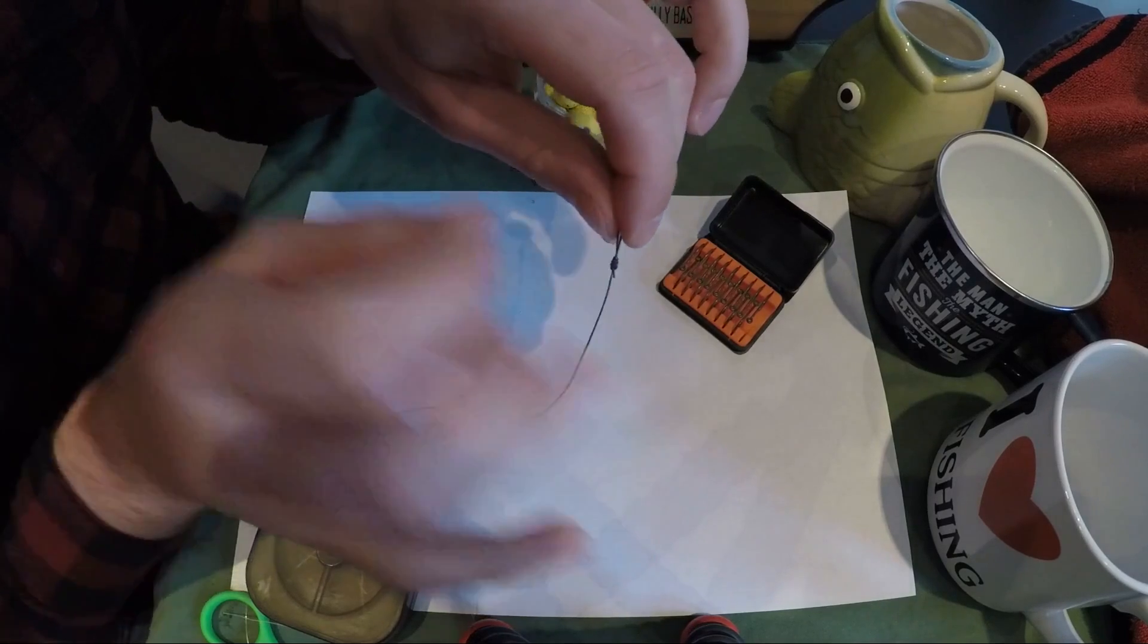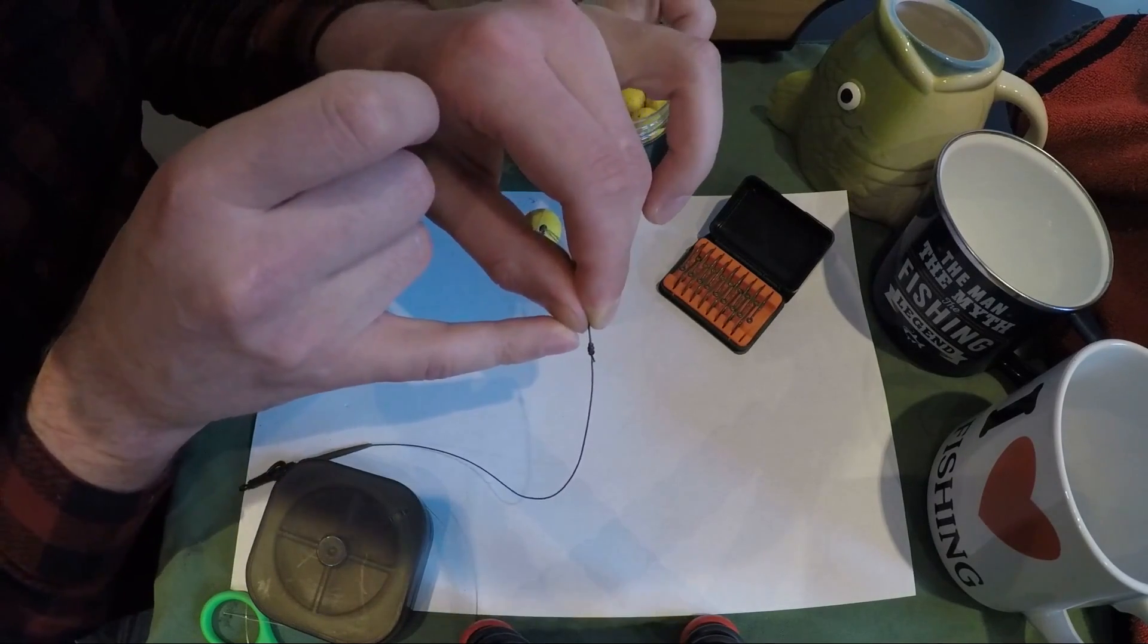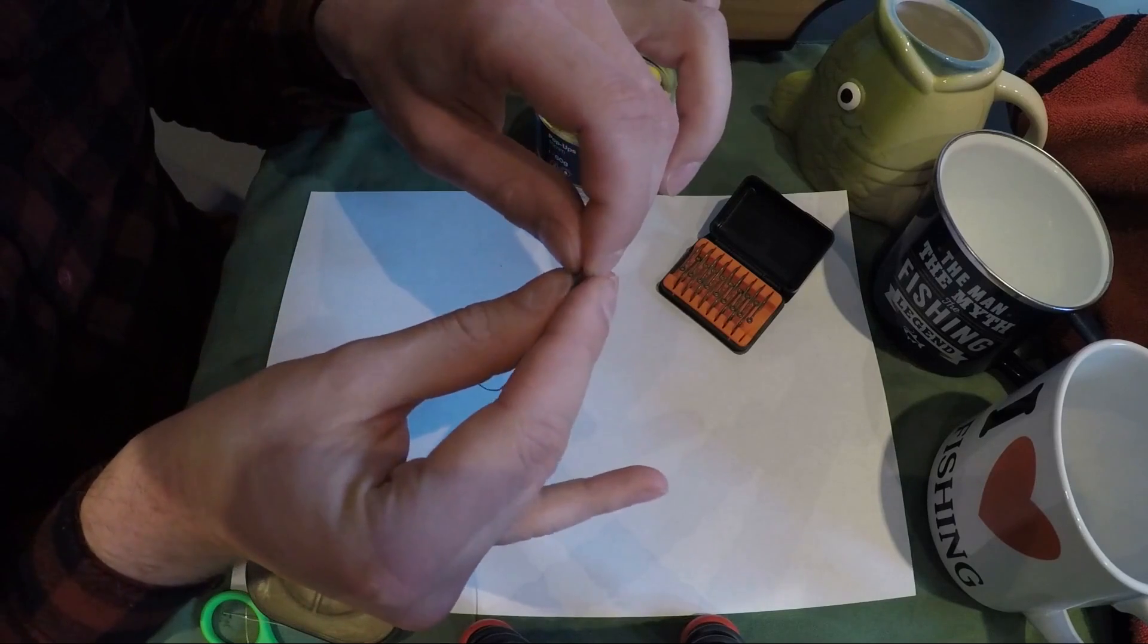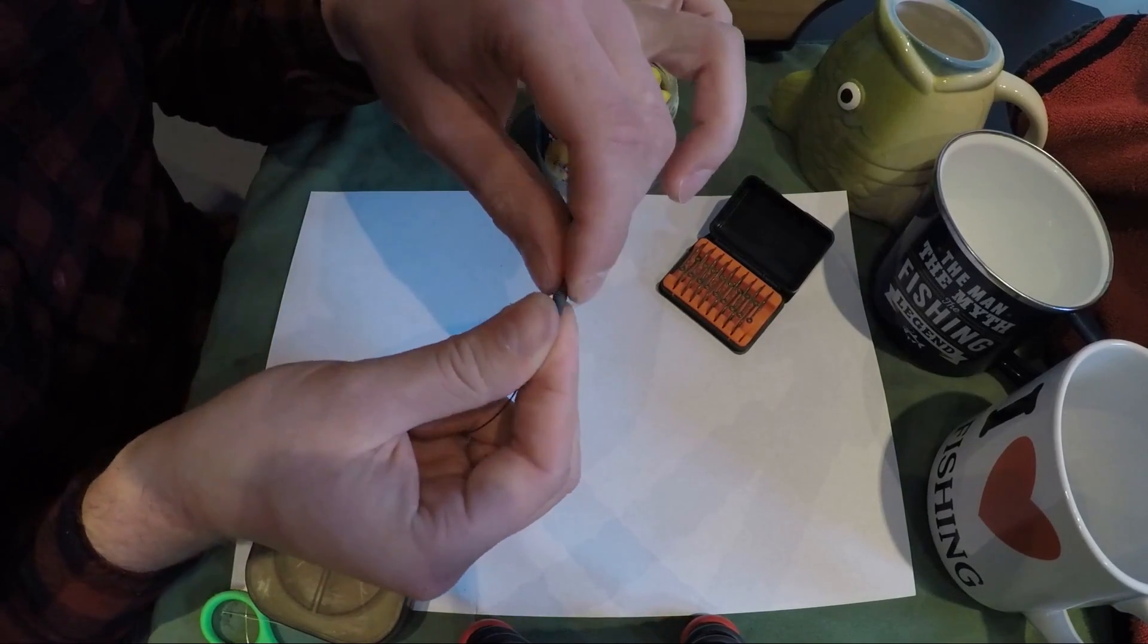I like to mold it around the knot of the loop section there, the little figure of eight loop knot. It's a nice convenient spot to do it anyway because you've got that knot that the putty can sit around.